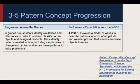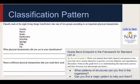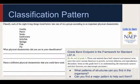Progression across the grades refers to how the cross-cutting concept of pattern should be addressed in grades 3-5. Classify each of the 8 living things listed — gorilla, parrot, snake, earthworm, jellyfish, sponge, fish, fly — into 1 or 2 groups according to an important physical characteristic. What physical characteristic did you use in your classification? Name a different physical characteristic that you could have used.